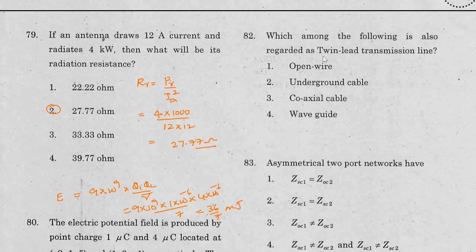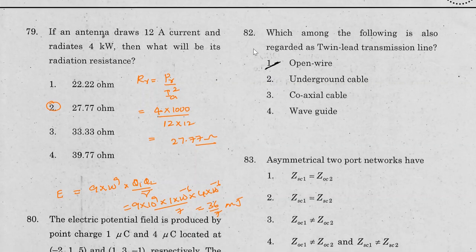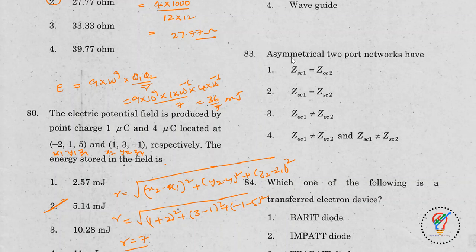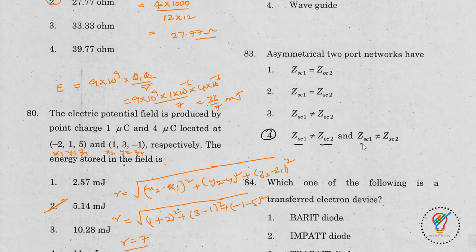Question 81: Which is also regarded as a twin lead transmission line? Answer: open wire. Question 82: In an asymmetrical two-port network, the open-circuit impedance at port 1 (Z11) is not equal to the open-circuit impedance at port 2, and similarly for short-circuit impedances. Answer is option 4.